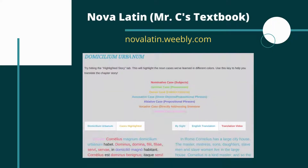Hey everyone, in this video we're going to take a look at chapter 15 from the Road to Latin textbook. This story is called Domicilium Urbana. Before we dive in, if you want to see the story in a different way or get more resources to help you, feel free to check out Nova Latin on my website — you can find a digitized version of it there.